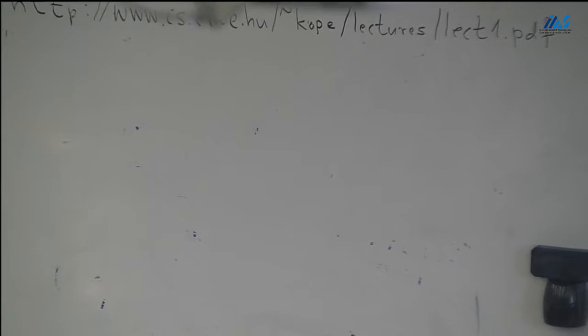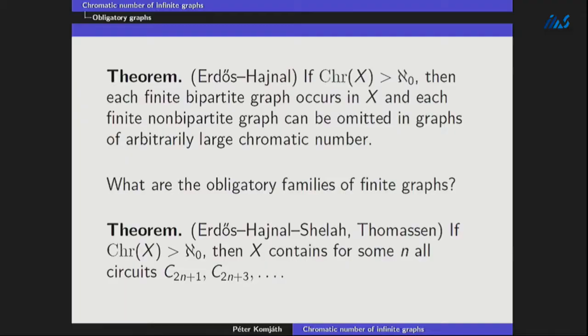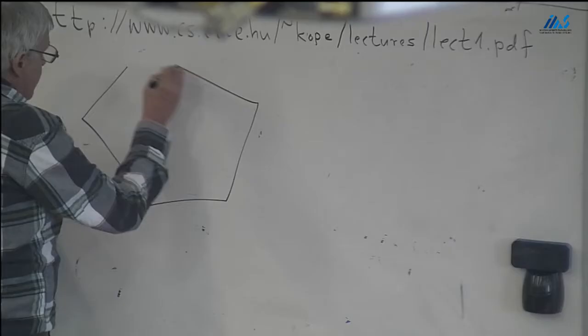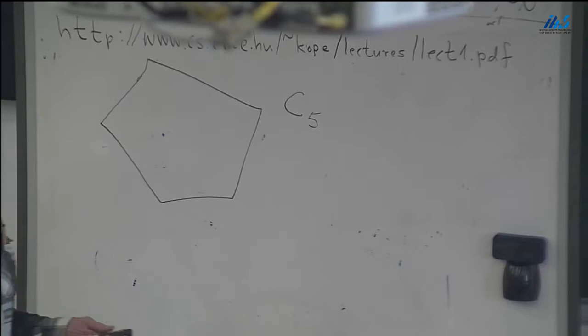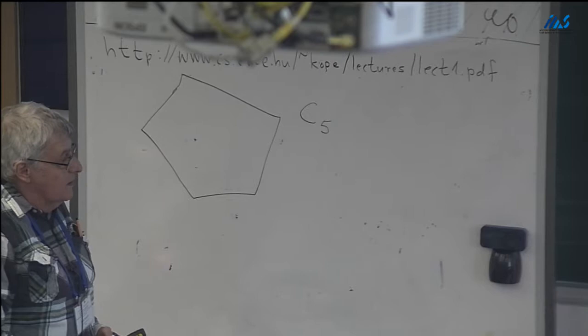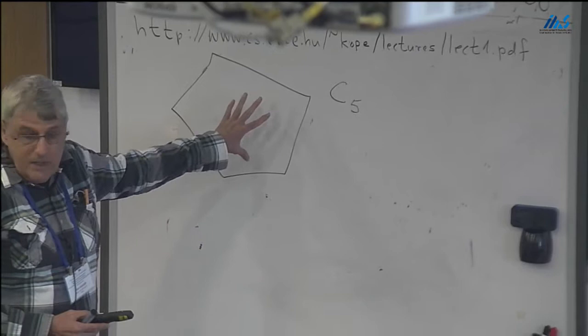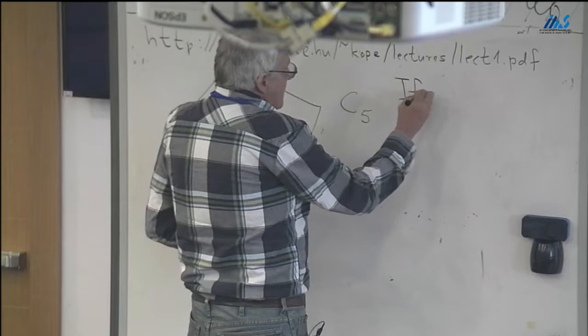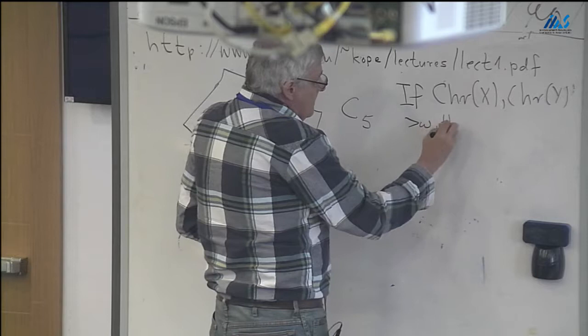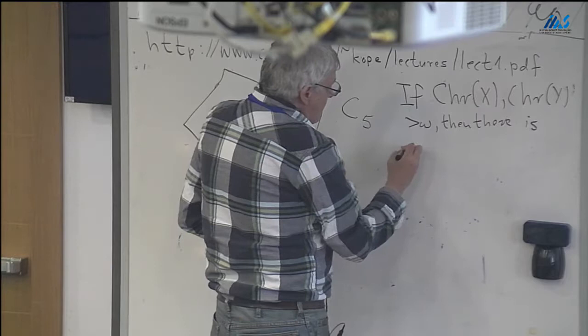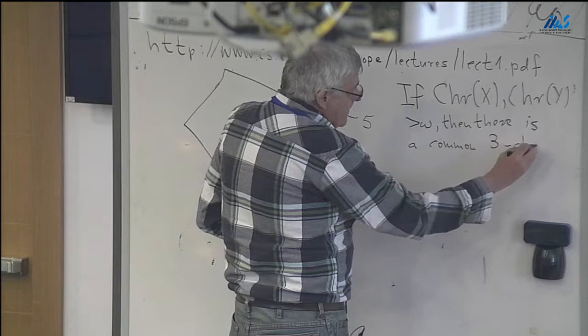So here is a theorem which says that every uncountable chromatic graph contains all sufficiently large circuits. So this is a circuit, C5, and similarly we define all the circuits. Any uncountable chromatic graph contains all long circuits.